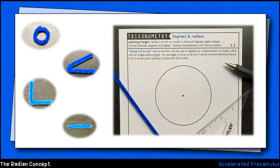A radian is an alternate approach to measuring angles and, as the name suggests, it is related to a circle's radius.